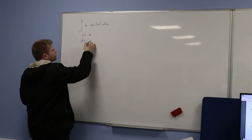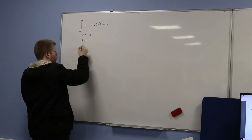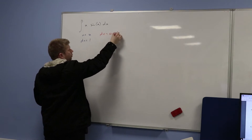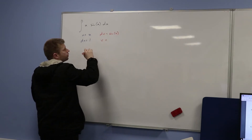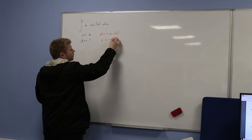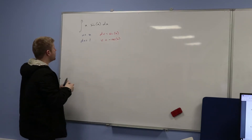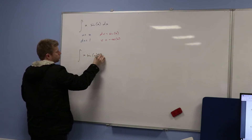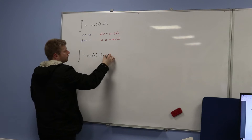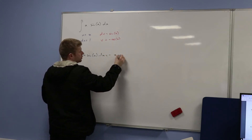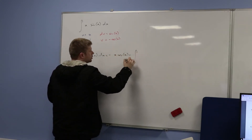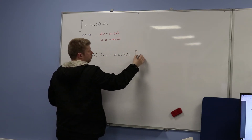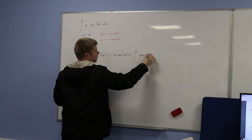Let's do it this way: u equals x, so du equals one. Which means that dv has to be equal to sin(x). I've just rubbed it off the board — so v equals negative cos(x). So the integral of x·sin(x) with respect to x equals u times v, which is negative x·cos(x), minus the integral of v·du — that's minus negative cos(x) times one, which becomes plus the integral of cos(x) with respect to x.